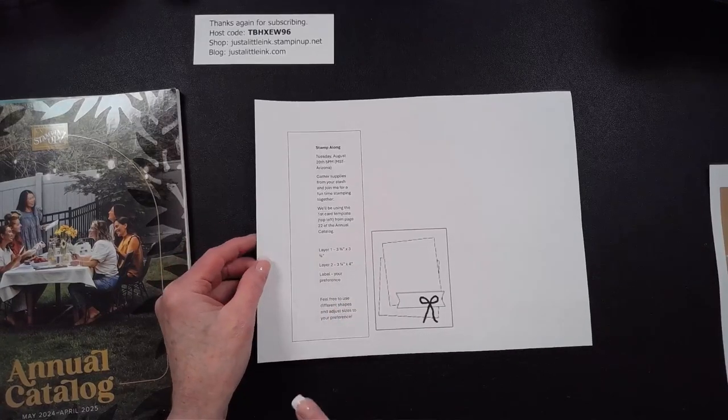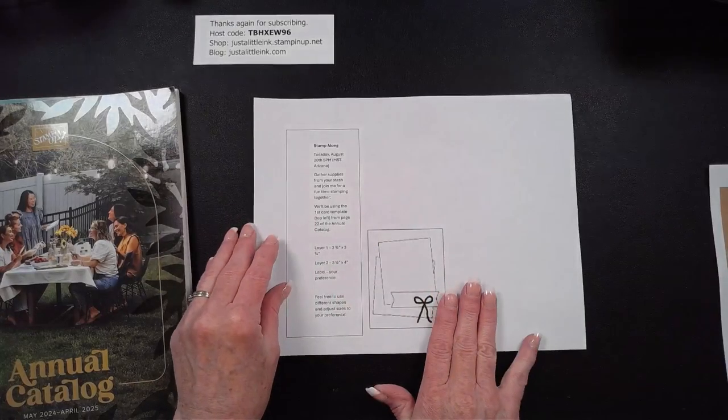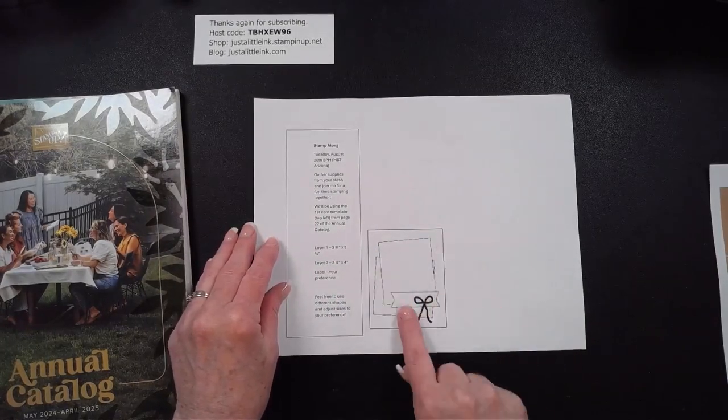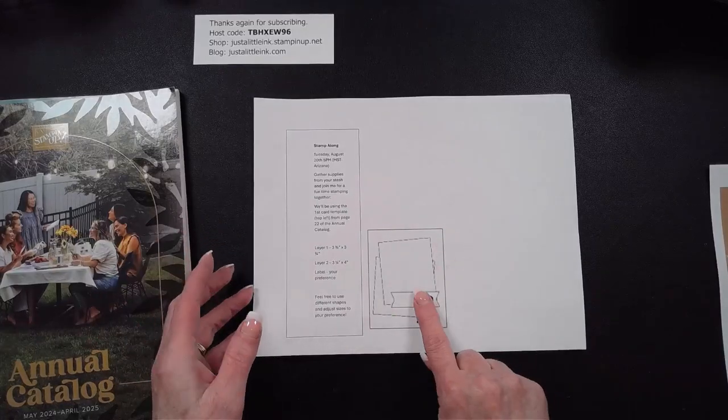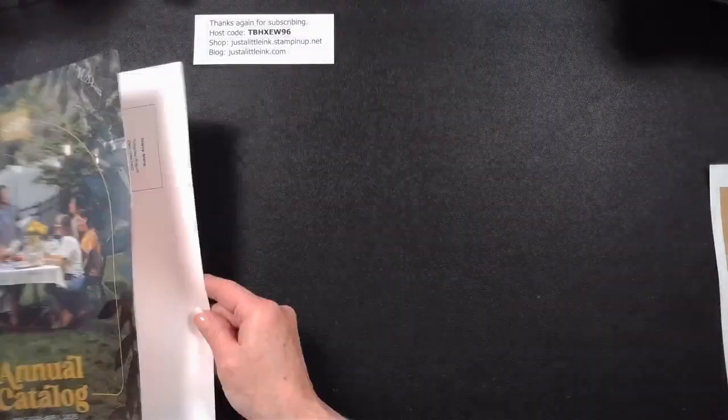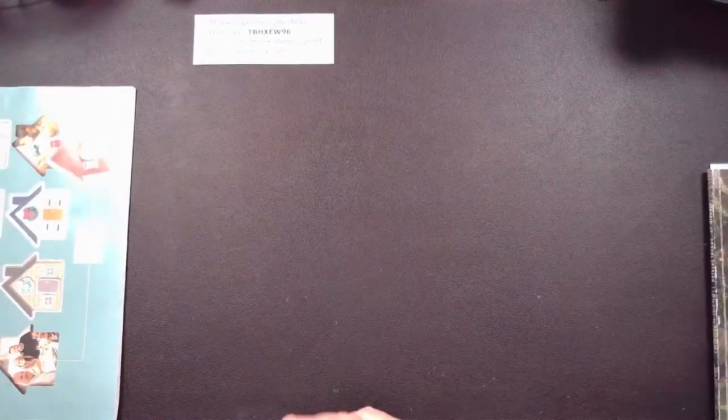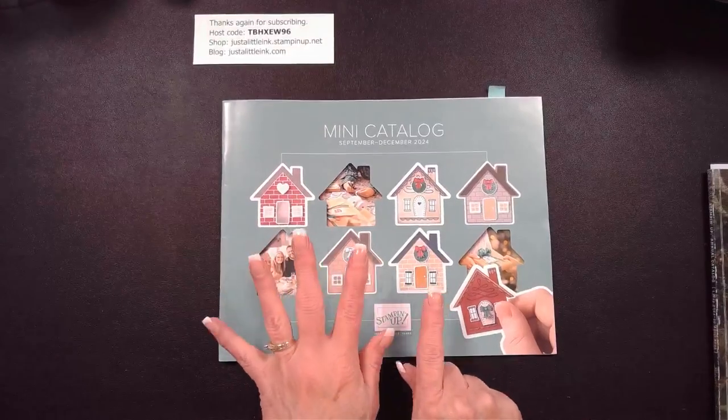All you need to do is RSVP and I will email you a link so that you can join me live. I'm thinking it'll be less than an hour long, but you bring your supplies and we will create together this layout. It doesn't have to be, you can use different shapes. The new mini catalog starts next month, September 4th.